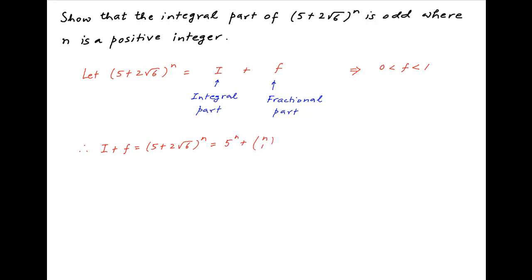The expansion gives: 5^n + C(n,1)·5^(n-1)·2√6 + C(n,2)·5^(n-2)·(2√6)² + C(n,3)·5^(n-3)·(2√6)³ + and so on. Let's call this Result 1.